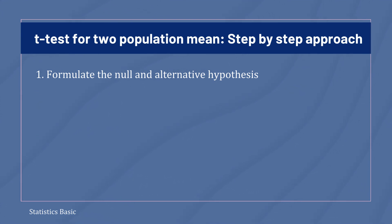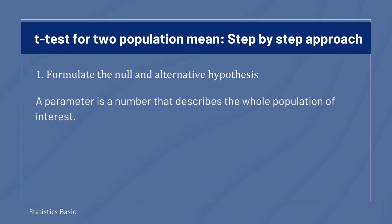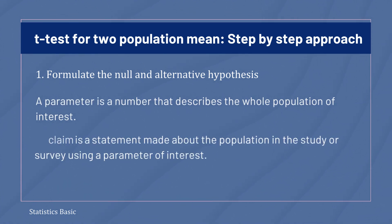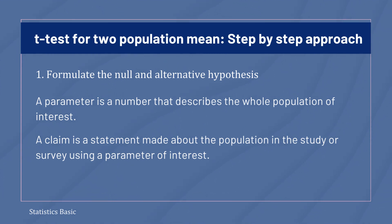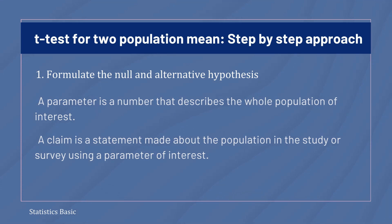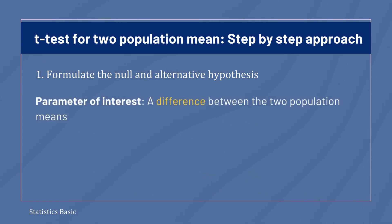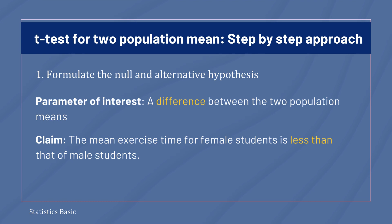Before developing the null and alternative hypotheses, we need to define the parameter of interest. A parameter is a number that describes the whole population of interest. A claim is a statement made about the population in the study or survey using a parameter of interest. In this scenario, the parameter of interest is the difference between the two population means, and the claim says that the mean exercise time for female students is less than that of male students.